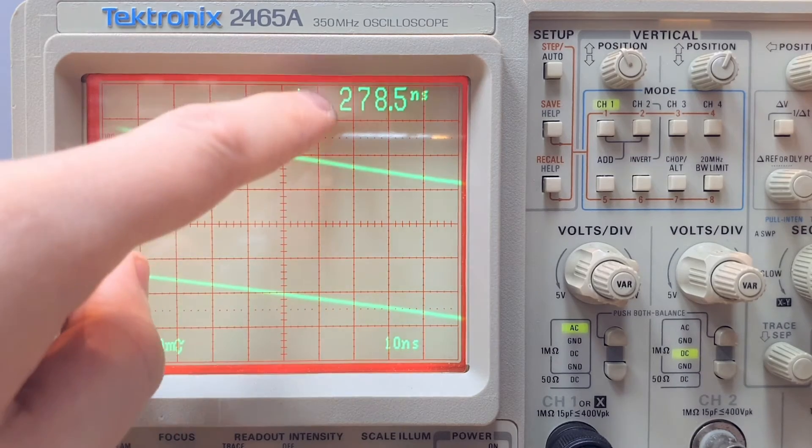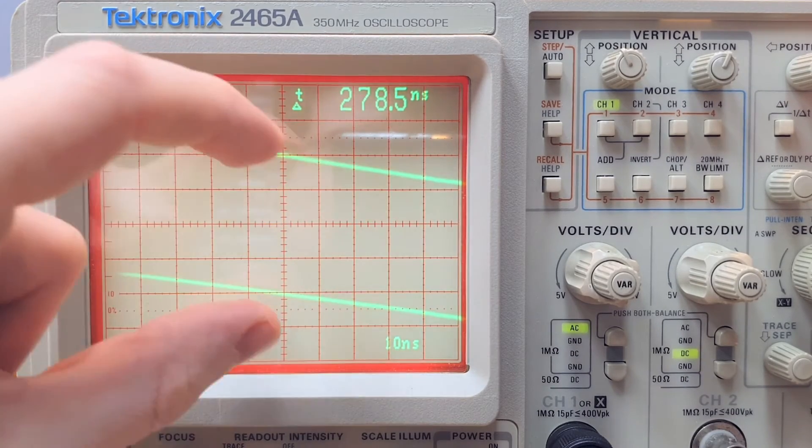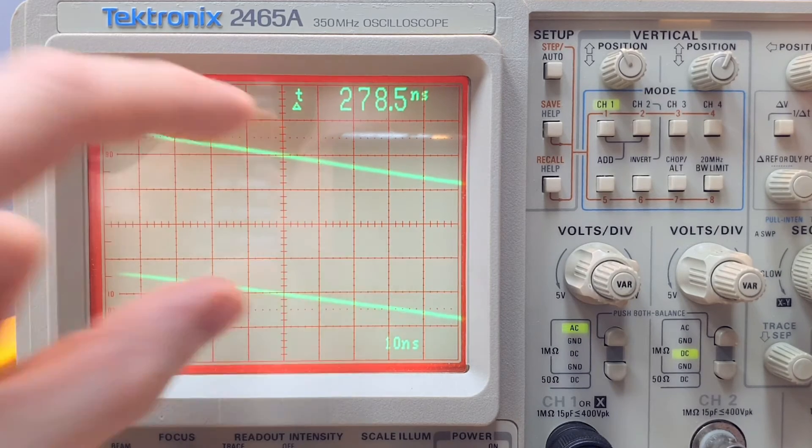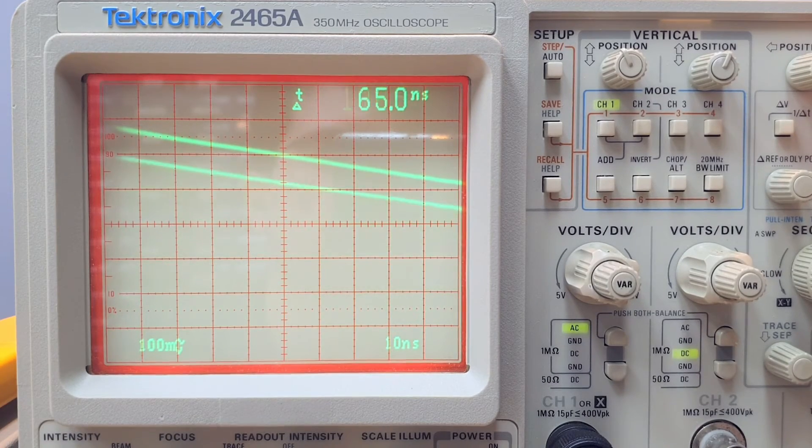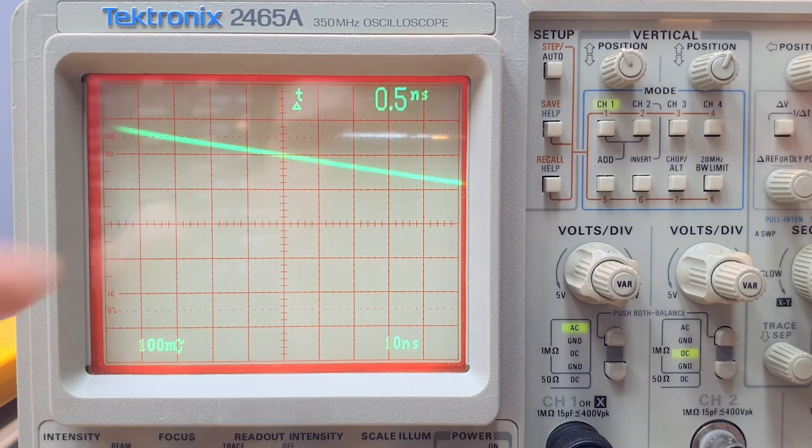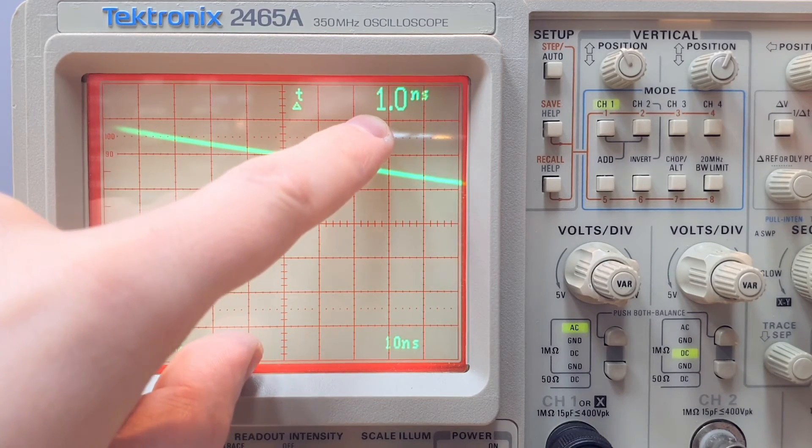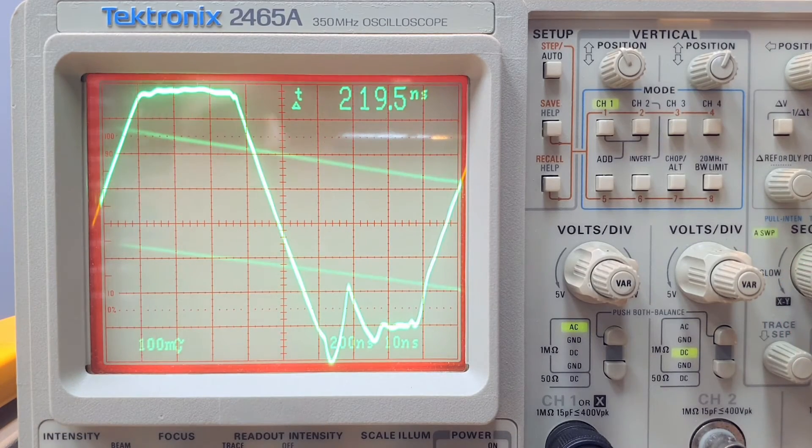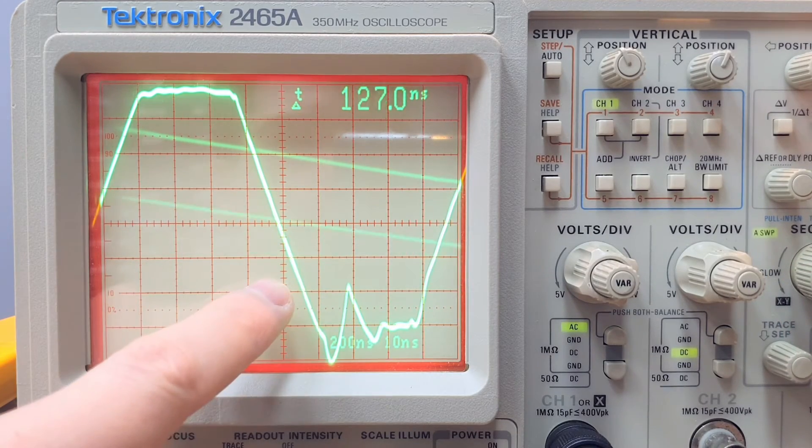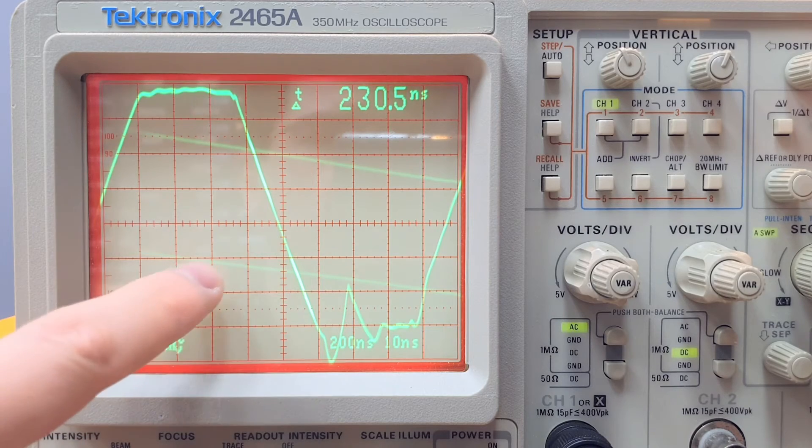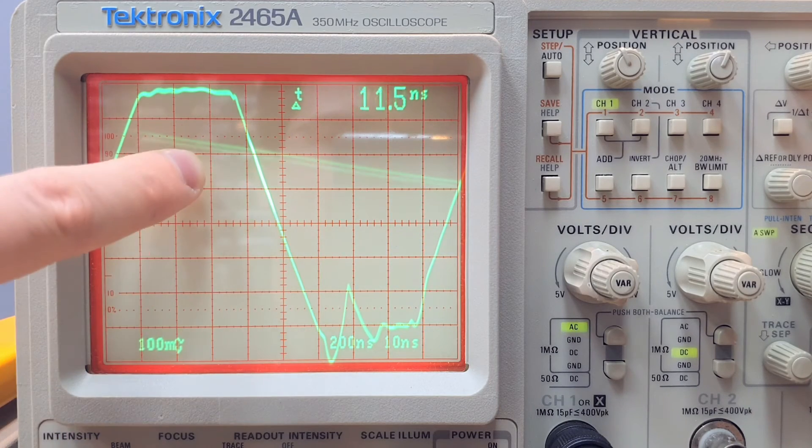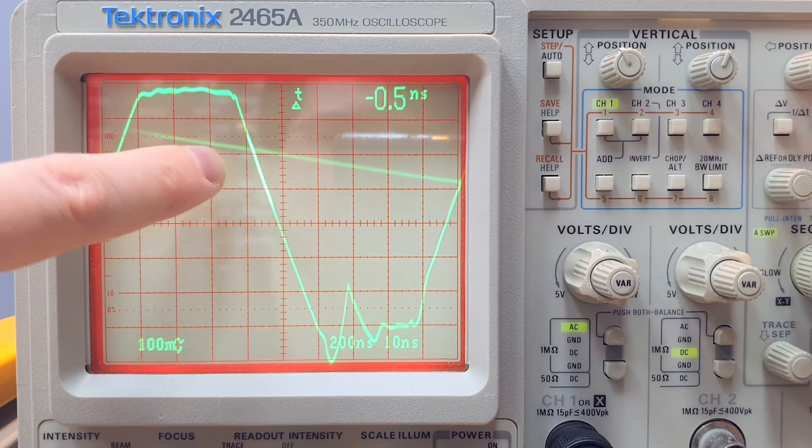We can align that transition there and we can align the other transition here. And now the oscilloscope is showing for us the time difference between the two traces. If we place one trace over the other, we're going to have zero seconds here. Because actually what we are doing here is changing the position where we are applying the second base trace here. This is so beautiful.